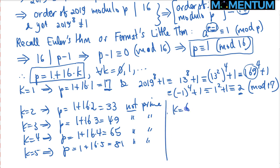K equals 6. That would imply P is equal to 1 plus 16 times 6, which is 97. So 97 is an odd prime. We can go ahead and check if it works.